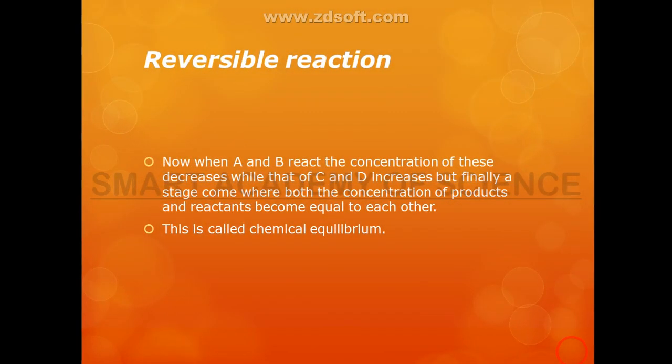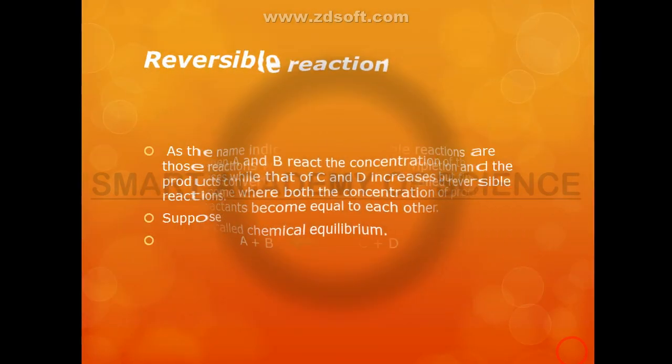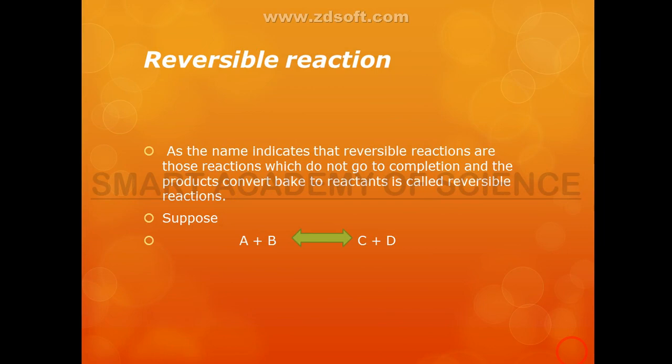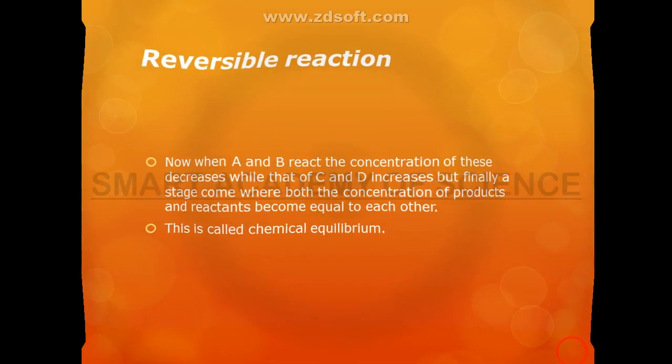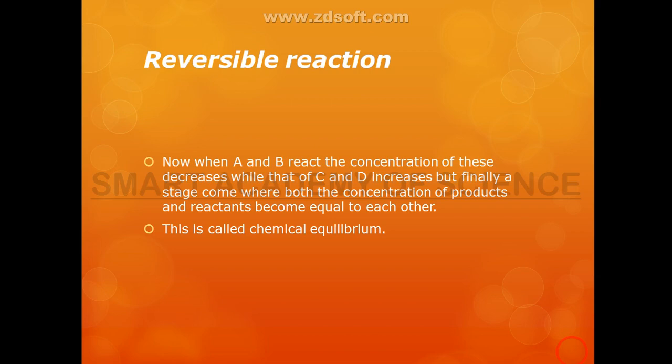When A and B react, the concentration of the reactants decreases while the concentration of C and D increases. When A plus B react, the concentration of C plus D increases until the concentrations of reactants and products become equal to each other.